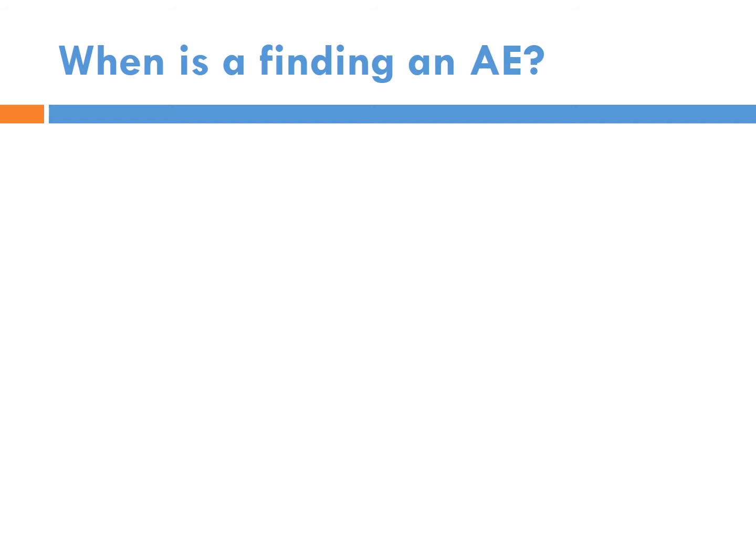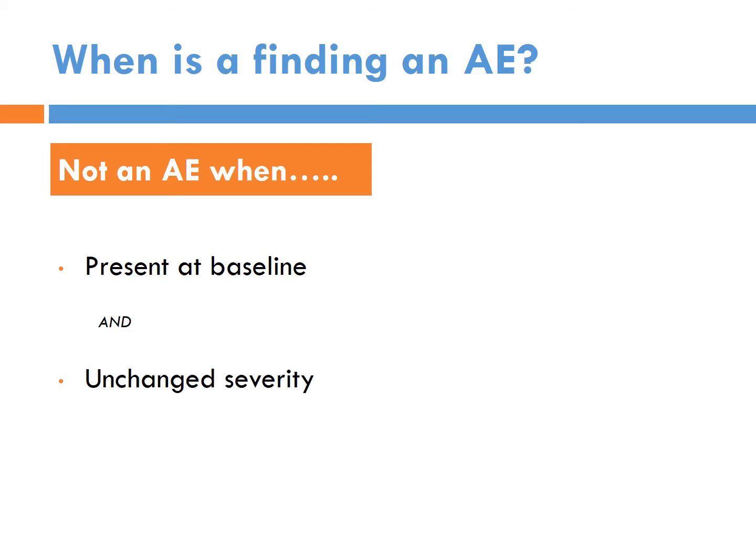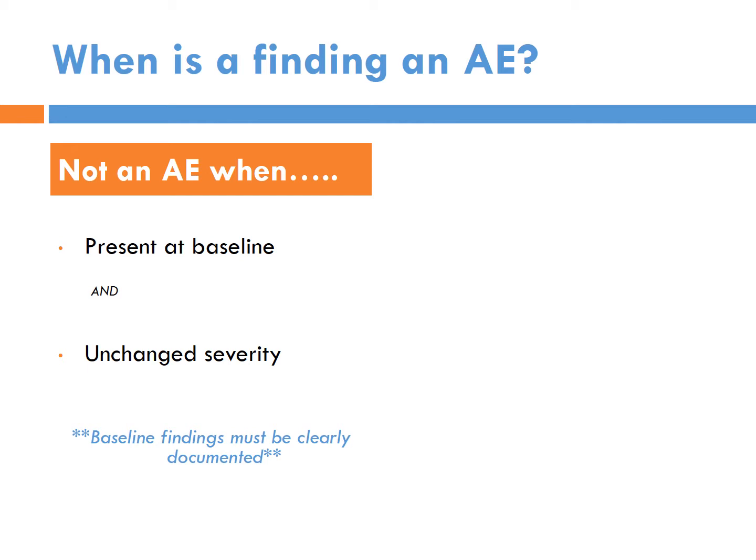When does a medical finding become an adverse event? Not every medical finding is one. A medical finding is definitely not an adverse event when it was present at baseline — meaning the time that person started on the clinical trial. When a person comes in for their very first history and physical and tells you they have asthma, and they haven't been dosed yet, that is not an adverse event — it's pre-existing. As long as that asthma doesn't get any worse, it's not going to be an adverse event. Baseline findings have to be really clearly documented if you want to argue something is not an adverse event.